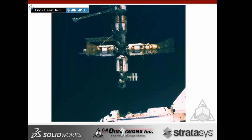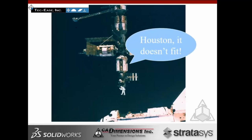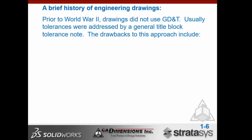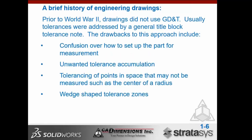Here's a brief history of engineering drawings. Prior to World War II, drawings did not use GD&T — tolerances were addressed by a general title block tolerance note. The drawbacks included: confusion over how to set up the part for measurement, unwanted tolerance accumulation, tolerancing points in space that may not be measured such as the center of a radius, and wedge-shaped tolerance zones. We have to ask ourselves: at what stage are the drawings you're using?